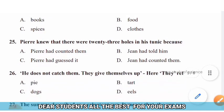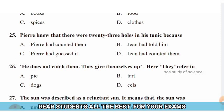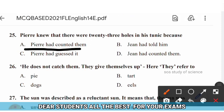Question 25: Pierre knew that there were 23 holes in his tunic because — options: (A) Pierre had counted them, (B) Jean had told him, (C) Pierre had guessed it, (D) Jean had counted them. The right answer is option A — Pierre had counted them. He knew there were 23 holes because he counted them himself.